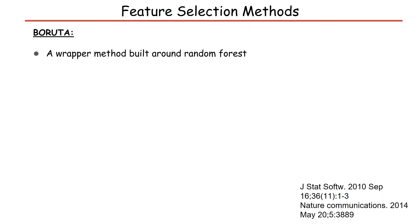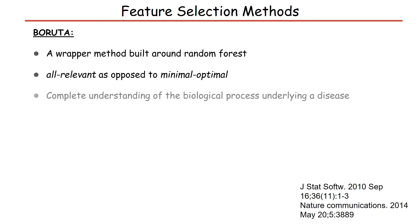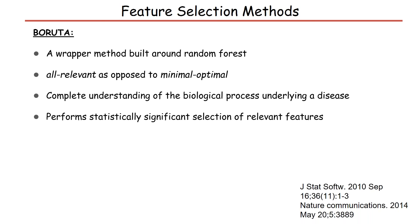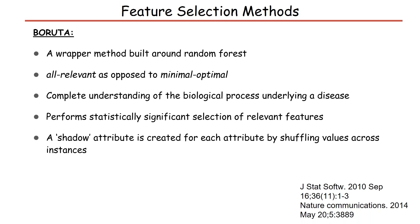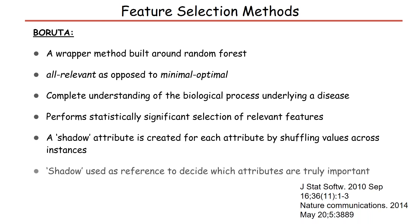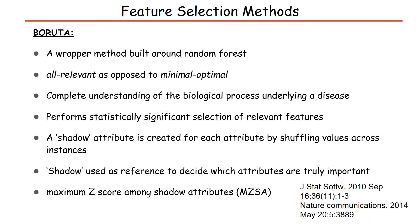We also use the Boruta method. This is also a wrapper method but built around random forest. It is an all-relevant approach, as opposed to minimal optimal. The advantage of the all-relevant approach is that it can provide a complete understanding of the biological process underlying a disease. It performs statistically significant selection of relevant features by creating a shadow attribute for each original attribute by randomly shuffling values across instances. The shadow attribute is used as a reference to decide which attributes are truly important. Original attributes that score better than the maximum Z-score among shadow attributes, or MZSA value, are considered relevant.